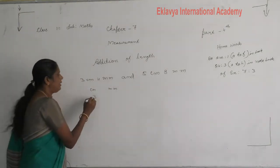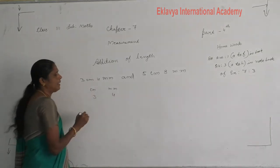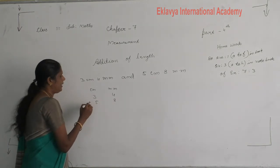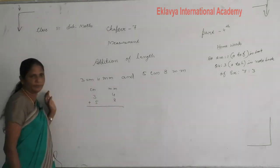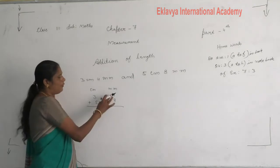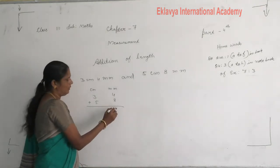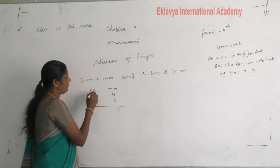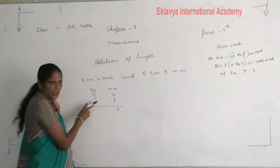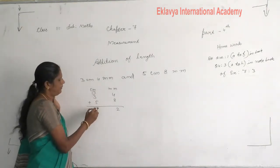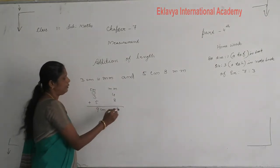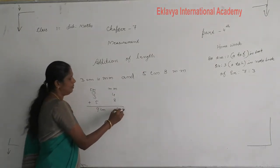Write 3, then 4. Here 5, then 8. Then add these numbers. 4 plus 8 is 12 — carry 1 here. Then 3 plus 5 is 8, plus 1 carried is 9. Your answer is 9 centimeter 2 millimeter.